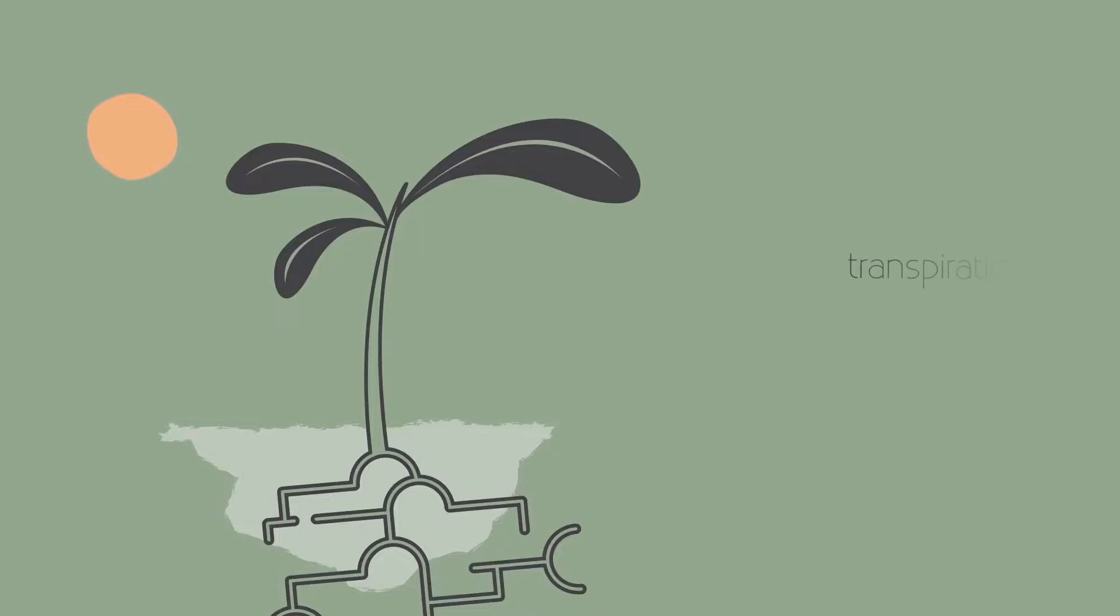This happens through transpiration. Transpiration is the evaporation of water from the parts of the plant that allow the exchange of air. These are the leaves and stem.